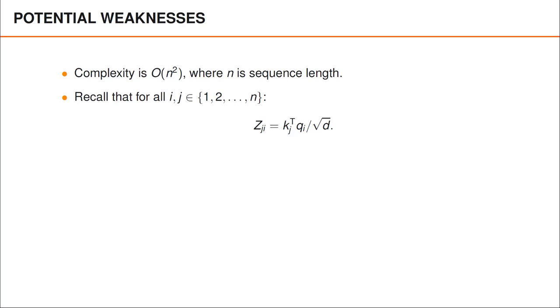Even though the transformer encoder has many fantastic properties, it also has weaknesses and people are continuously trying to modify and improve on the architecture. One reason is that it's computationally heavy to use the encoder for long sequences. Specifically, the complexity grows quadratically with the sequence length, which is easy to see since self-attention takes the inner product between every pair of key and query vectors. Since there are n key vectors and n query vectors, there are n² such pairs.